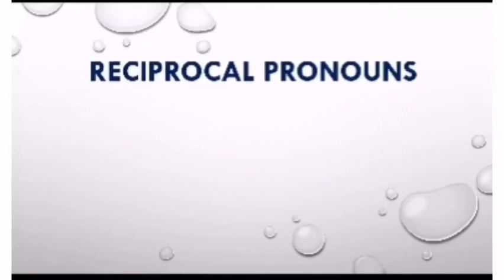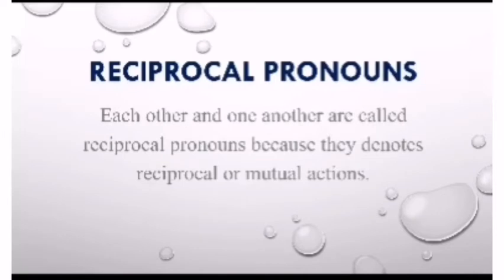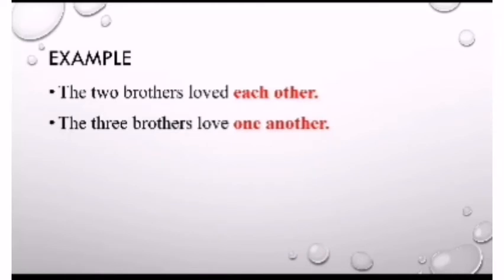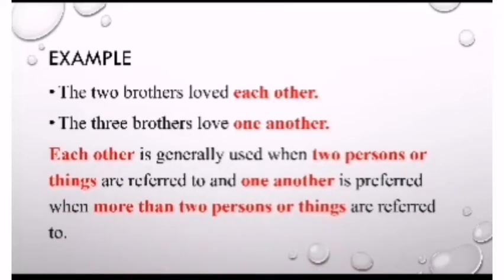Next is reciprocal pronoun. There are two reciprocal pronouns: 'each other' and 'one another.' They are called reciprocal because they denote a mutual or reciprocal action. 'Each other' is used when two persons or things are referred to, and 'one another' is preferred when more than two persons or things are referred to. For example, 'The two brothers love each other' — one loves the second and the second loves the first. 'The three brothers love one another' — more than two are involved.